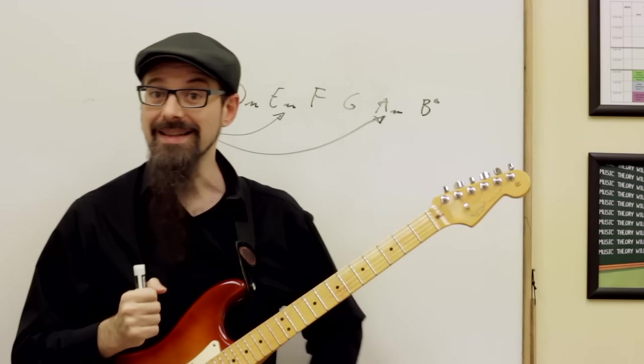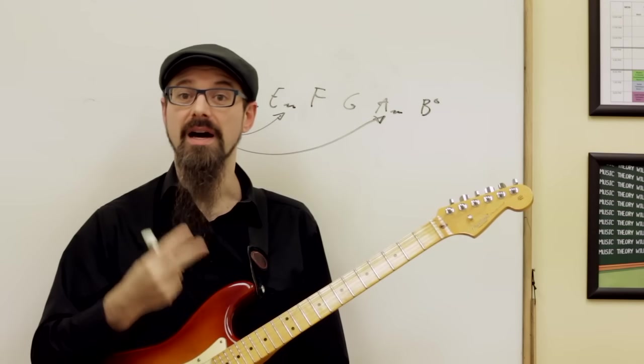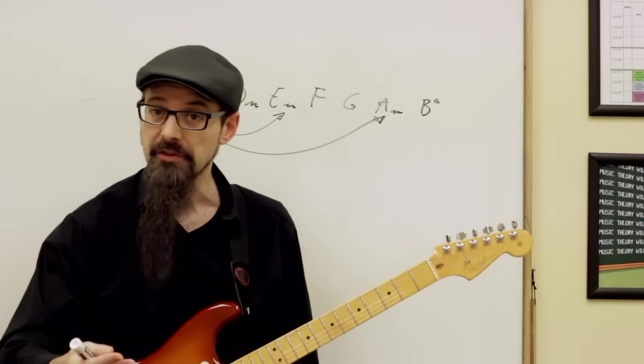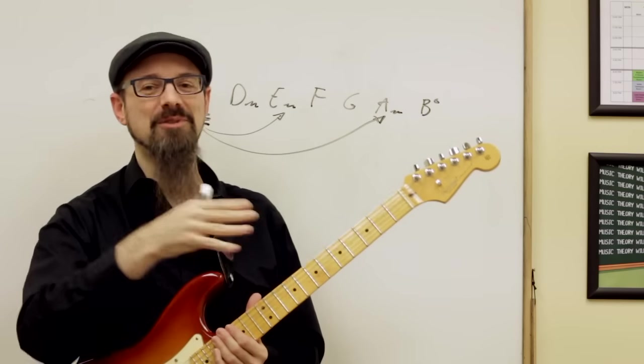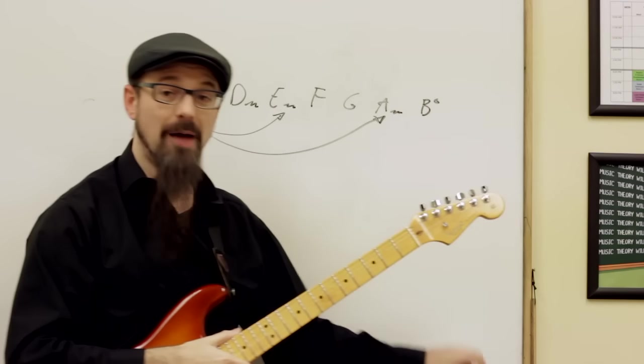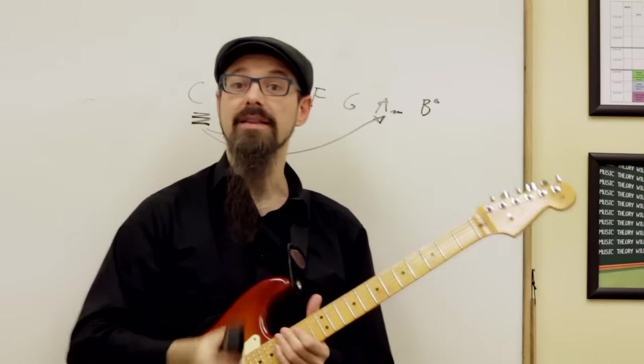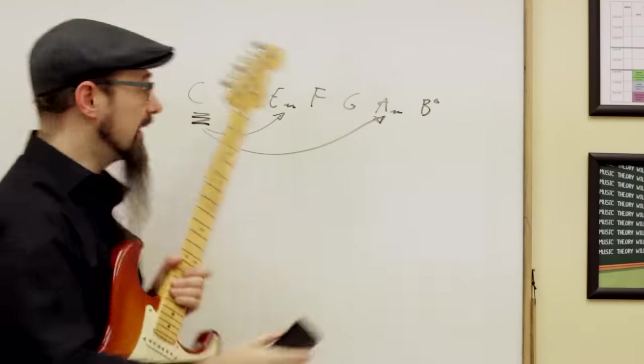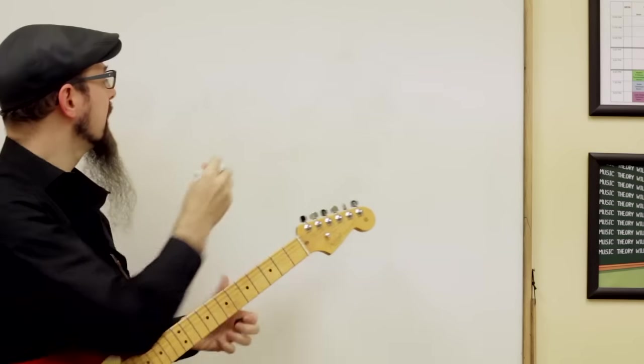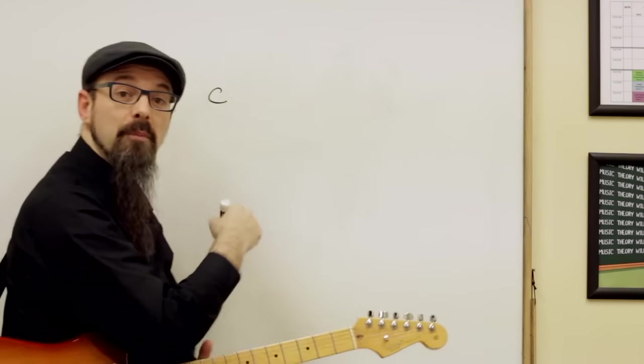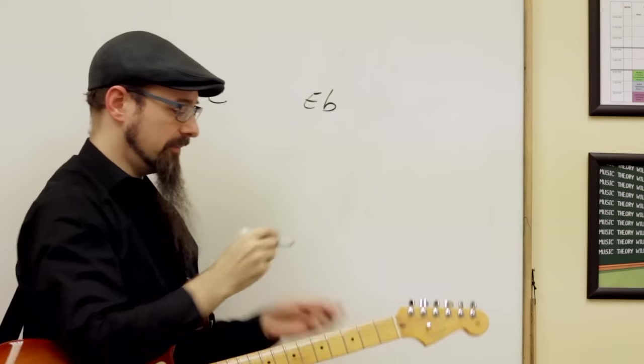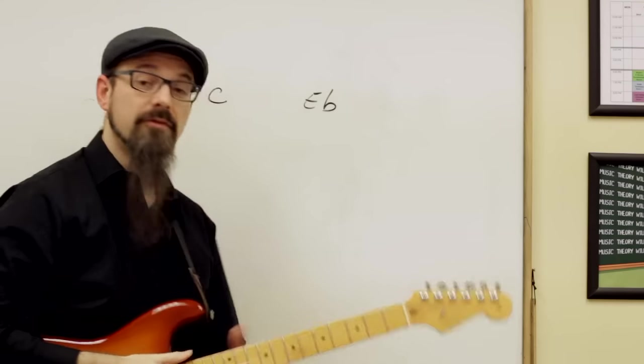Now, we call them chromatic mediant when those two chords are not in the same key, but you're still moving up and down either a major third or a minor third. A minor third would be three frets on your guitar. A major third would be four frets on your guitar. And if you move up or down that amount of frets and the two chords are not in key, you have a chromatic mediant. Let's make a simple example. I'm still starting from C. And I want to go up a minor third instead, and I get another major chord, and I get E flat.